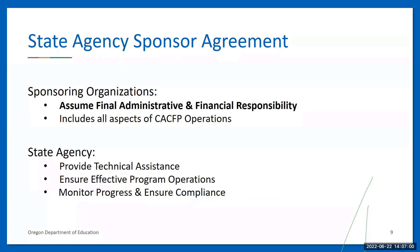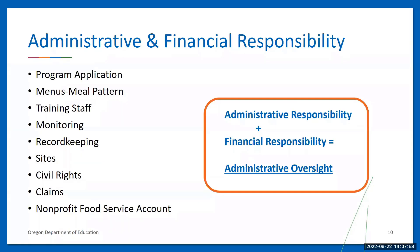Let's talk about the CACFP state agency sponsor agreement, which identifies the requirement of administrative oversight and serves as a starting point for operating the CACFP. The Child and Adult Care Food Program is a federally funded program that provides payments for eligible meals served to program participants. Sponsoring organizations enter into agreements with the state agency, making the sponsor the ultimate responsible party for ensuring that all requirements of the agreement are met, including assuming final administrative and financial responsibility of the CACFP in compliance with all program, federal, and state regulations.